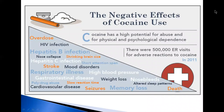Some people find that cocaine helps them perform simple physical and mental tasks more quickly, although others experience the opposite effect. Large amounts of cocaine can lead to bizarre, unpredictable, and violent behavior. As with other drugs, repeated use of cocaine can cause long-term changes in the brain's reward circuit and other brain systems, which may lead to addiction.